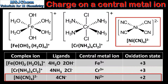In the last example on the right, the central metal ion is a nickel ion. The charge on the complex ion is 2-. The ligands are 4 cyanide ions. Cyanide ions are negatively charged, so the total charge on the ligands is 4-. Subtracting the total charge on the ligands from the charge on the complex ion, we can determine that the charge on the nickel ion is 2+ and the oxidation state is +2.